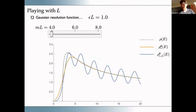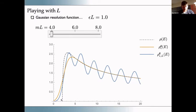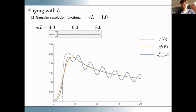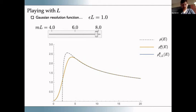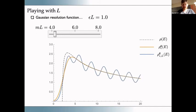Now with a larger smearing — epsilon over m equals one — the dashed gray curve does differ somewhat from the orange curve in the infinite volume, though the effect becomes negligible at larger energies. The blue curve represents the volume effects, and now as you dial the box size from mL equal to four to mL equal to eight, you already go from the oscillatory regime to suppressed volume effects.